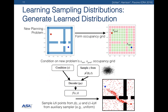Online, the CVAE is then used to generate distributions for new planning problems. The new problem is first formed into the conditioning variable, and then the latent space is sampled from to generate new samples. The samples are augmented with samples from an auxiliary uniform sampler to maintain theoretical guarantees and protect against errors in the learned distribution.